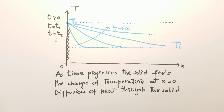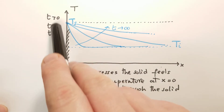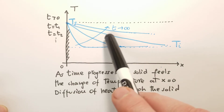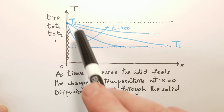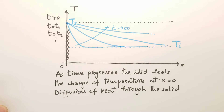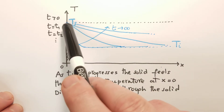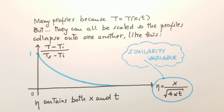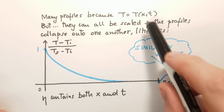As time evolves, the temperature profile inside the semi-infinite solid changes. As time grows — T equal T1, T equal T2 — the solid feels the change in temperature and becomes hotter and hotter. Eventually, as T goes to infinity, all the points of the solid will reach temperature Ts, the temperature of the surface. We get an infinite number of profiles as a function of the coordinate x as time evolves.